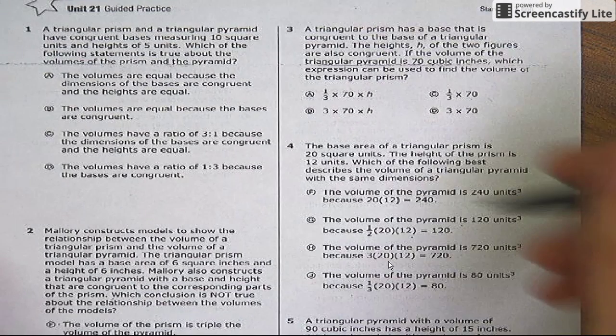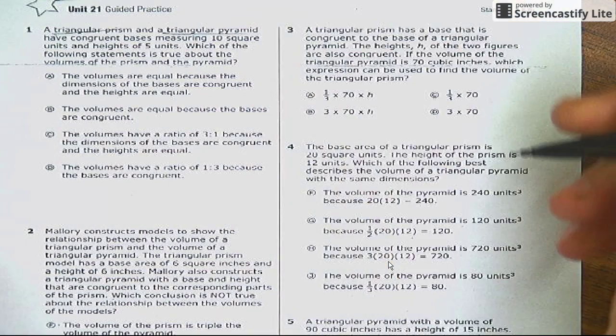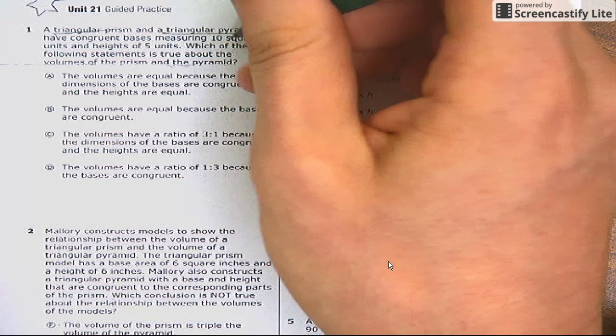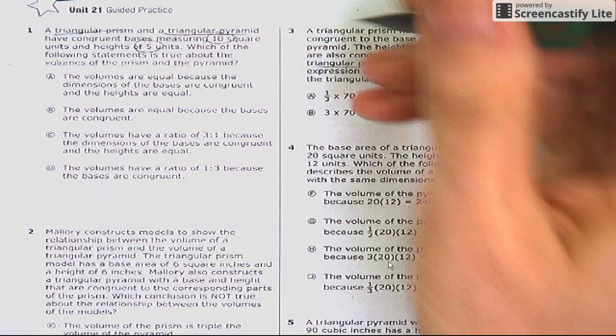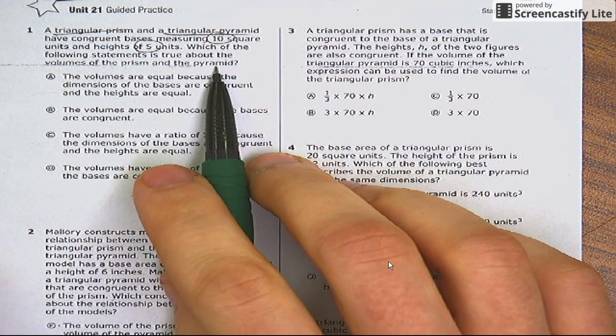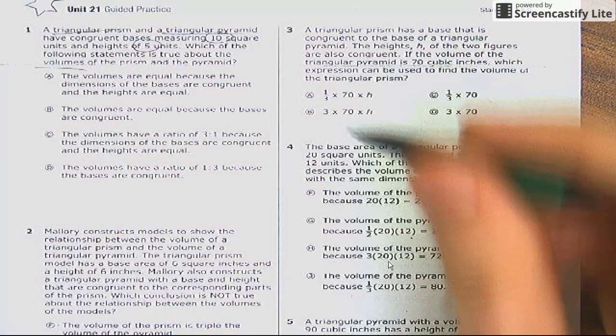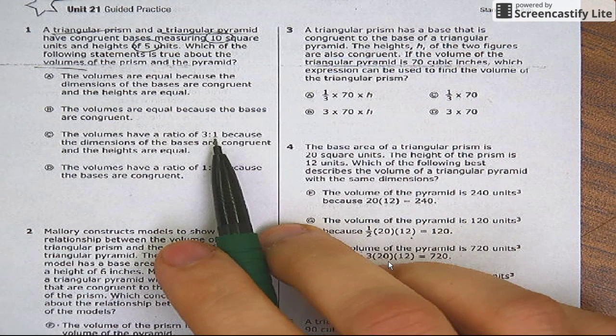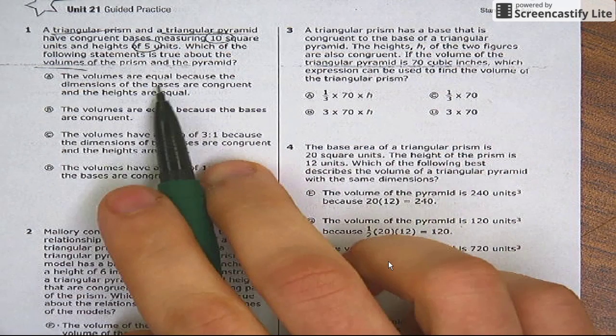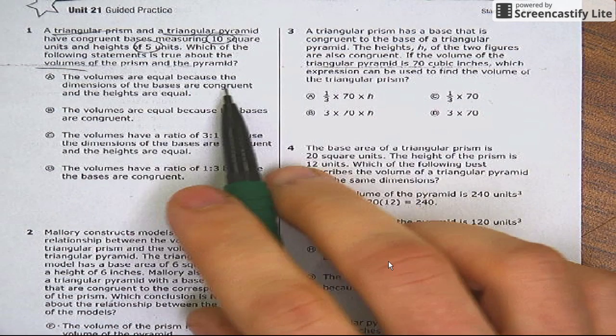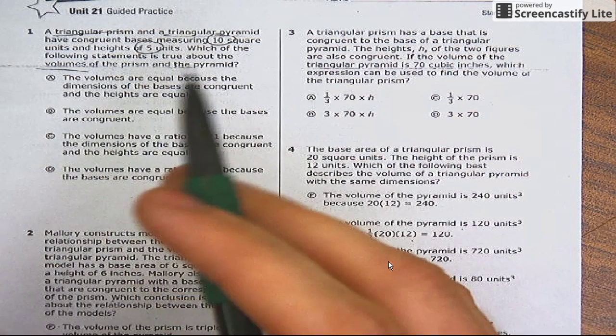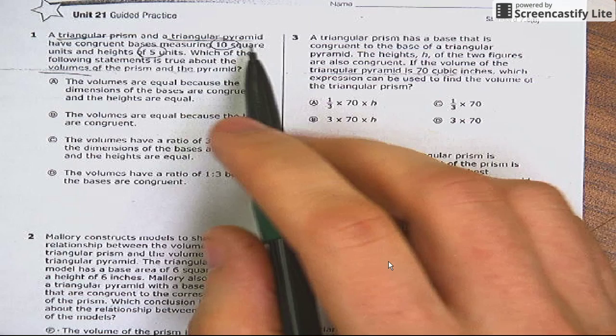Number one: a triangular prism and a triangular pyramid have congruent bases measuring ten square units and heights of five units. Which of the following statements is true about the volumes of the prism and the pyramid? About the volumes. Okay, guess what? It doesn't tell me the height of the pyramid or the prism, so there's no calculation to do. There's not enough information to calculate. So I'm thinking this question has to do with a one-third relationship there—three pyramids in a prism. Let's see if I'm right.